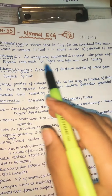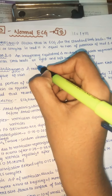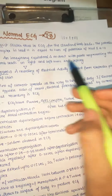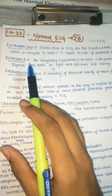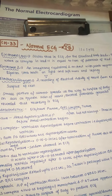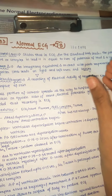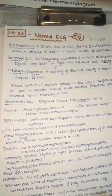The Einthoven triangle is an imaginary equilateral triangle on the chest. It is an inverted triangle — the apex is towards the bottom and the base is upward — with points representing the standard bipolar limb leads on the right arm, left arm, and left leg. We use only the left leg, not the right leg, because the heart is mostly located towards the left side. In bipolar limb leads, the leads are connected to the right arm, left arm, and left leg.